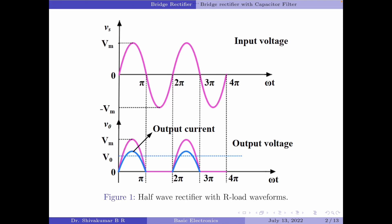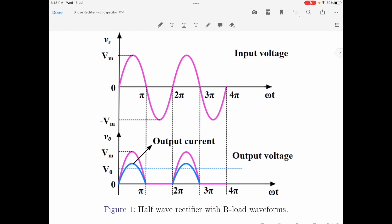In my previous videos I have discussed the half wave and full wave rectifiers with resistive load. The output voltage waveform for the half wave rectifier with a resistive load is shown in figure 1. Note that a half wave rectifier produces an output wave every alternate half cycle. With such an output, the average output voltage is quite low, that is 0.319 Vm. Also the ripple content of this half wave rectifier output is quite high — it is equal to 1.211. So we say that such an output is not practical to use as it does not produce a steady DC supply.